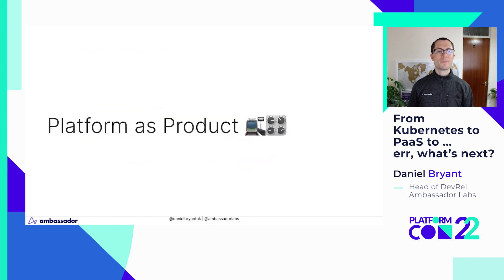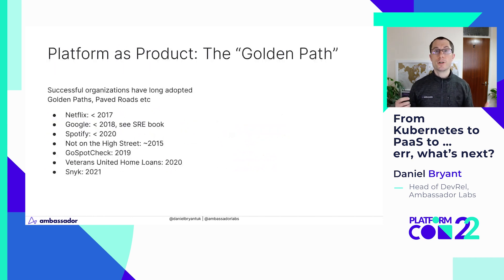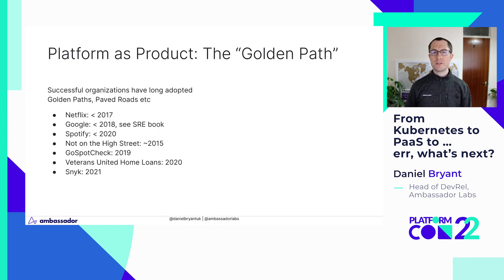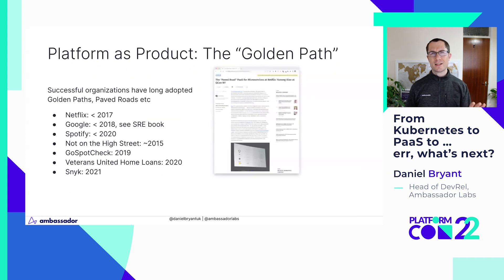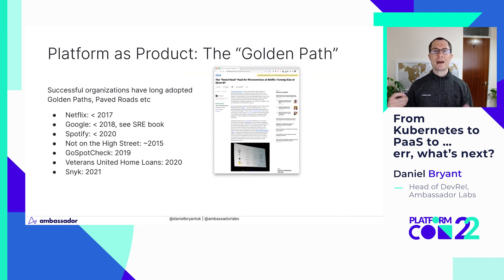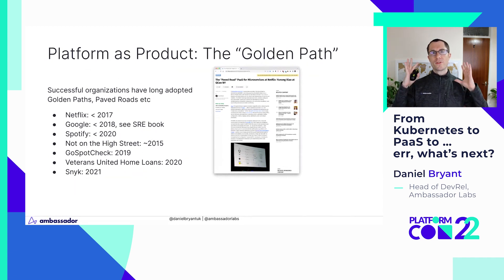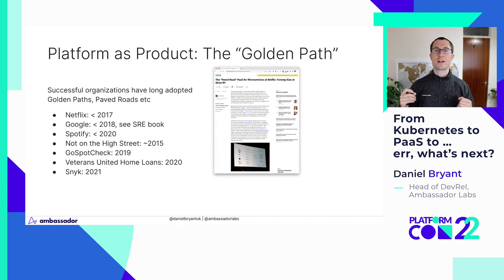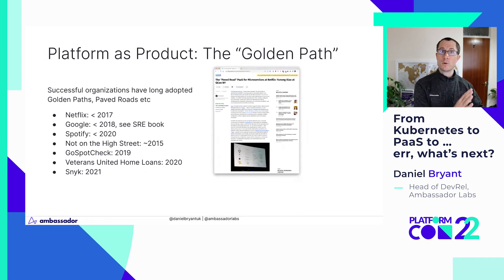Platform as a product — this notion of treating your platform as a product is not new. Many of the FANGs, the big companies, the unicorns, have been doing this notion of a golden path for quite some time. I first bumped into it from Netflix in 2017. They talked about a paved road, a paved path — a platform that, if developers adopted it, their lives were very easy. They were supported, there were nice docs, it was very clear how the platform worked.